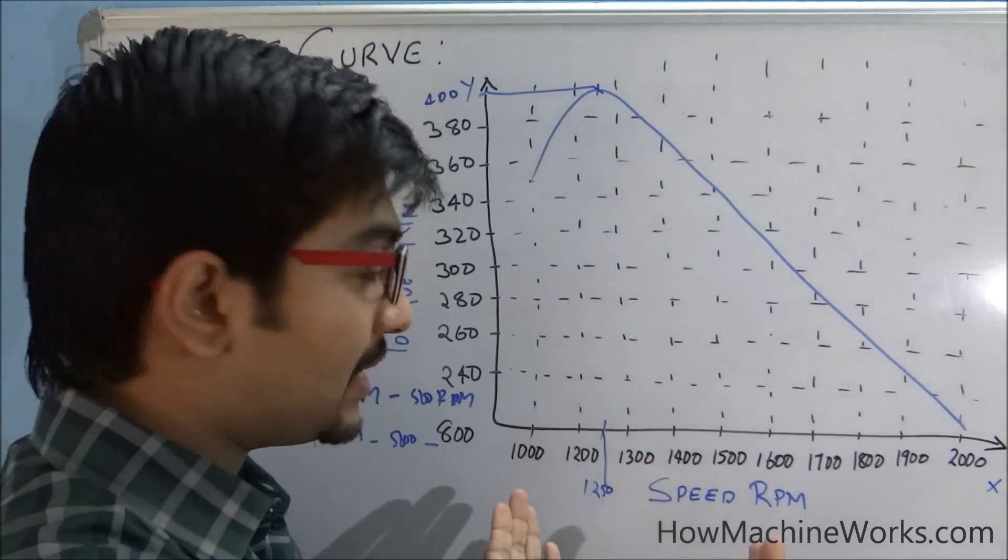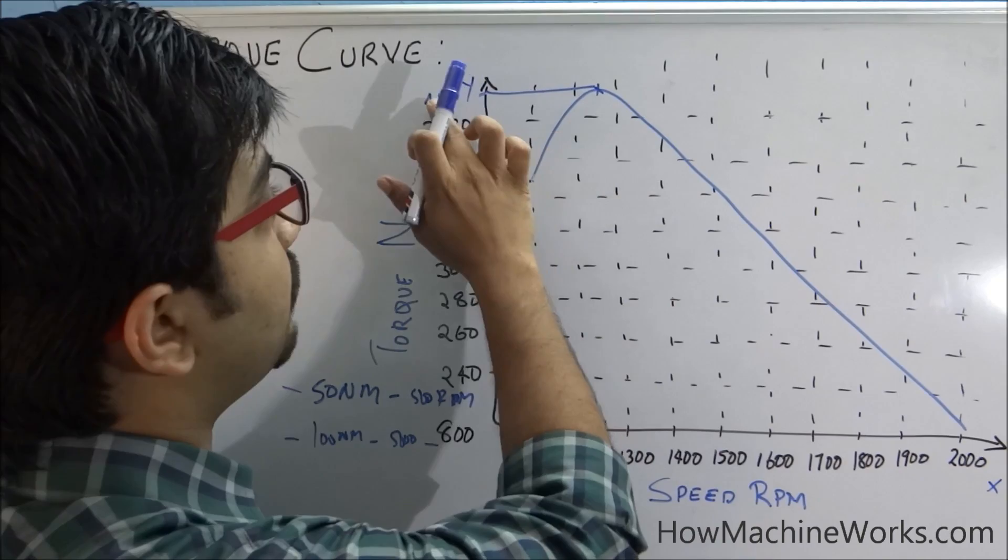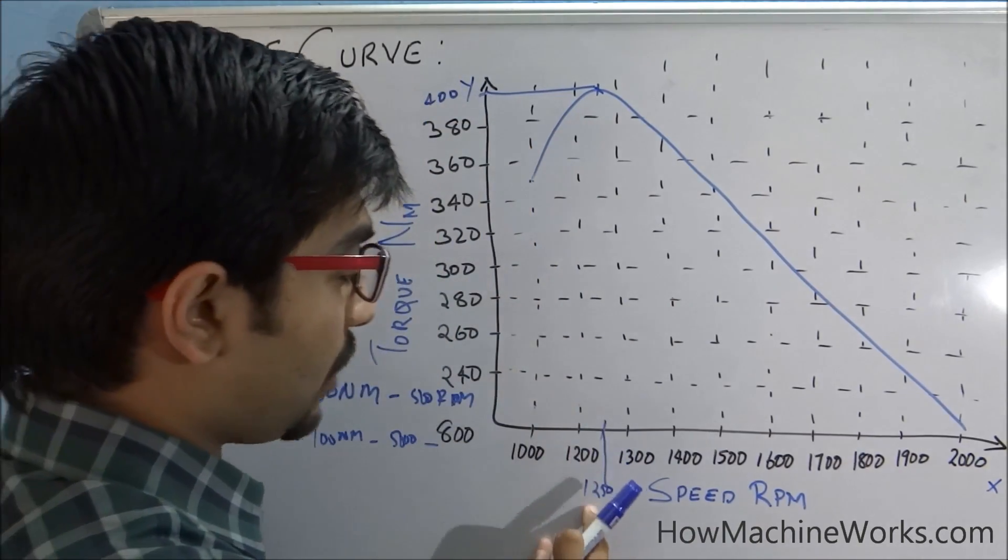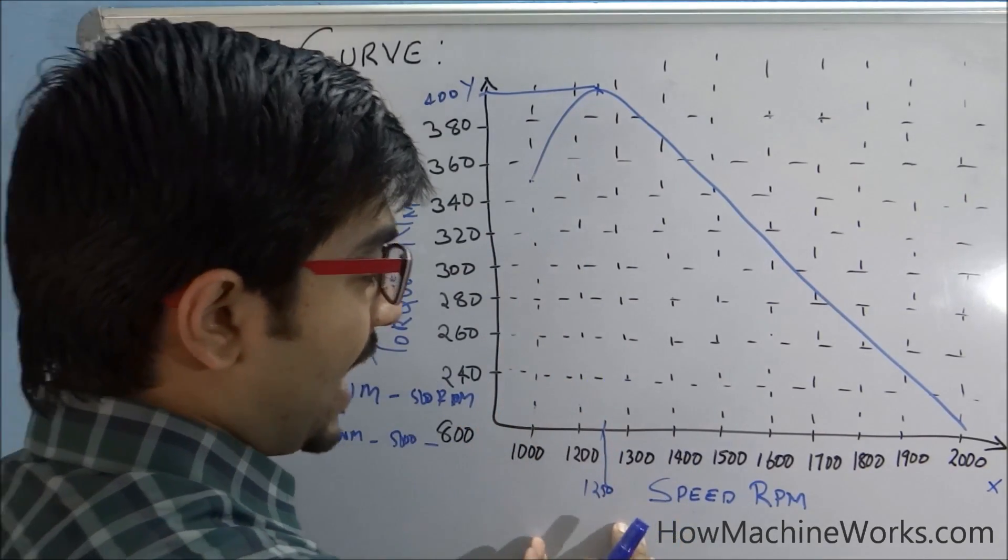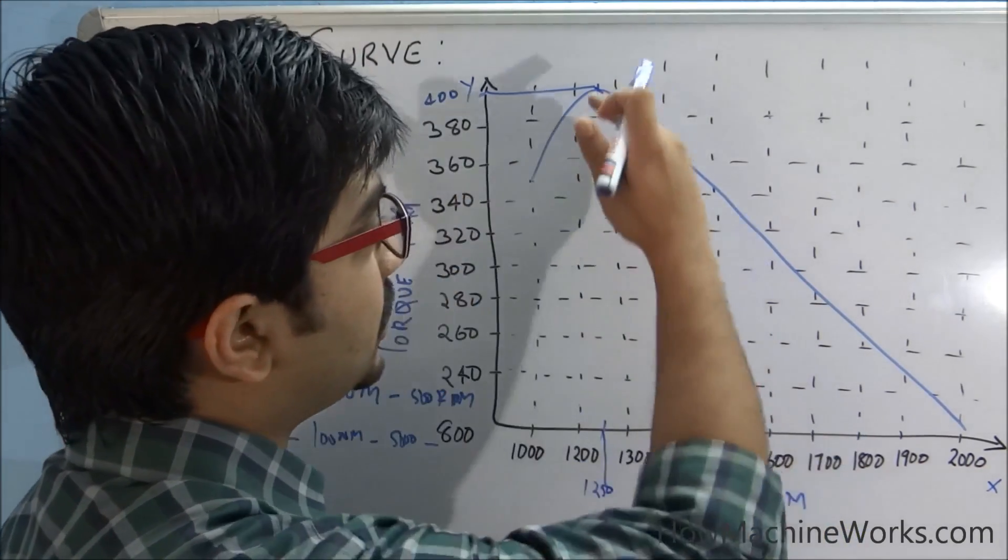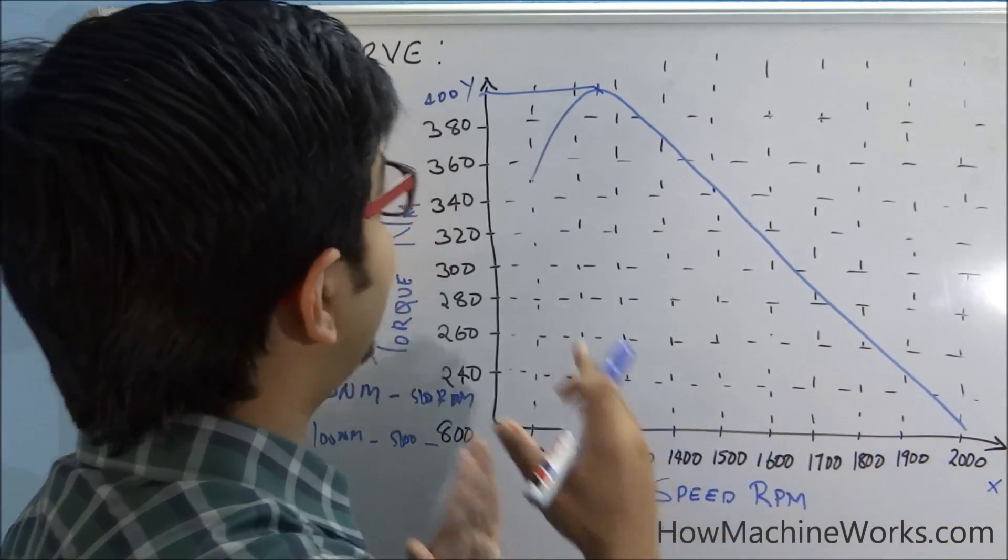We can see that at an optimum RPM we will get the maximum or the optimum torque. Here it is 1250, we have 400, that is the maximum torque we are able to achieve. But as the RPM increases, it tends to reduce, the torque is getting reduced. So that is called as the torque curve.